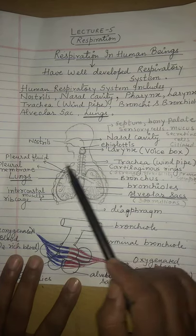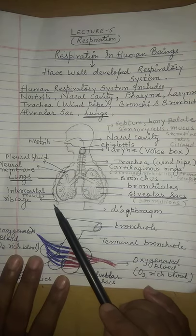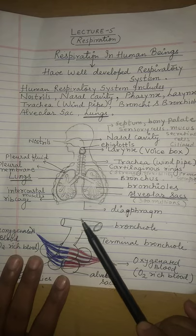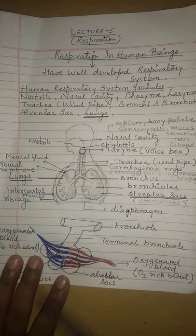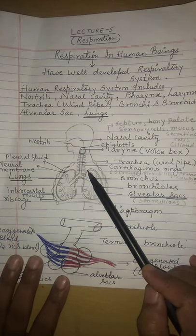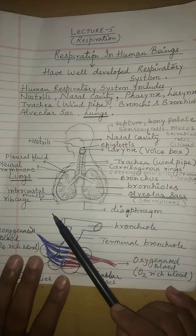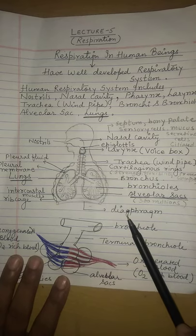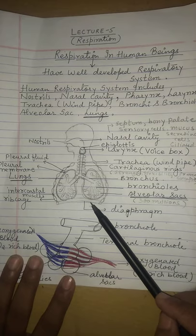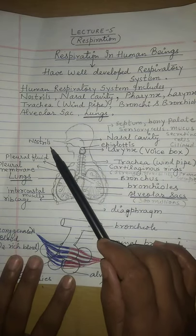The diaphragm divides the body's chest cavity from the abdominal cavity. We will also read about the other functions of the diaphragm. Let's start the detailed study of the human respiratory system.